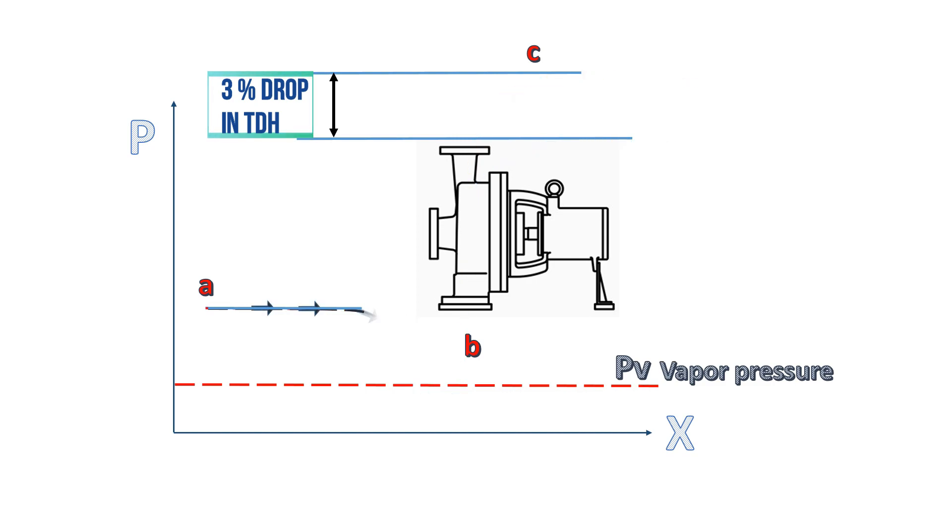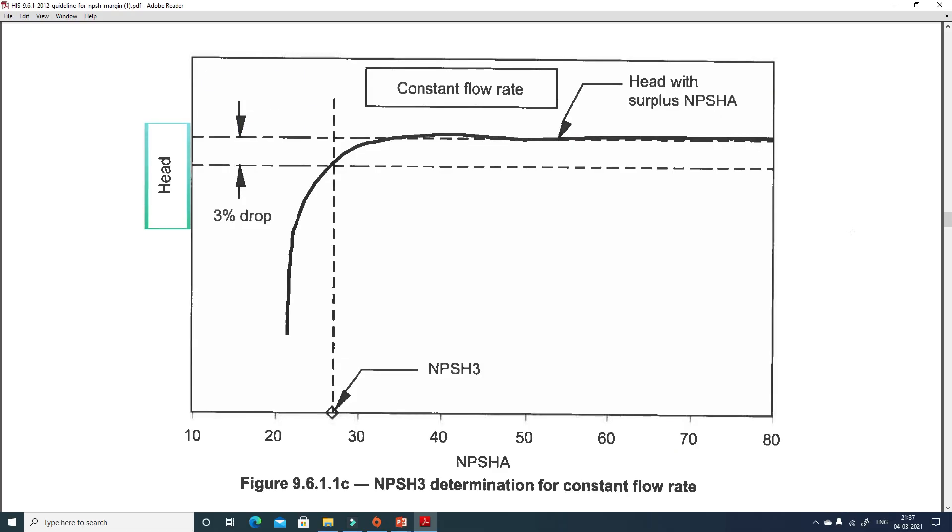Then a graph is plotted between total developed head and net positive suction head available. This graph will look like this. The point A marked on this graph, where the total developed head reduced by 3%, the net positive suction head available corresponding to this point A is known as net positive suction head required. It is also known as NPSHR3.